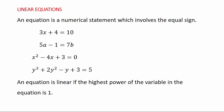Now, what is a linear equation? An equation is linear if the highest power of the variable in the equation is 1. From algebra, we know that variables and coefficients exist. For example, in the equation 3x plus 4 equals 10, x is a letter that keeps changing, so x is called the variable. The number attached to the variable is called the coefficient.